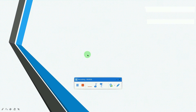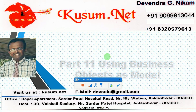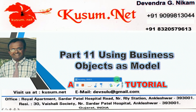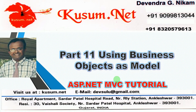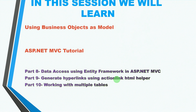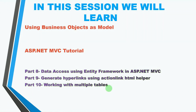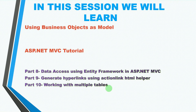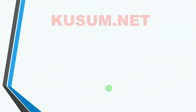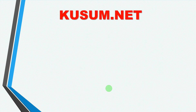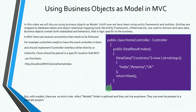Welcome to kusum.net. This is an ASP.NET MVC tutorial and you are going to watch part 11: using business objects as model. In this session you will learn about business objects as model. Before watching this video, please watch my parts 8, 9, and 10. In the previous video of part 10, I explained about how to pass data from one table to another table using action link and controller coding.